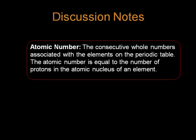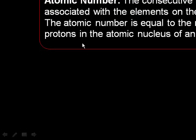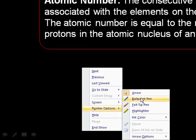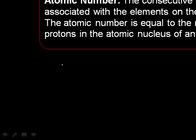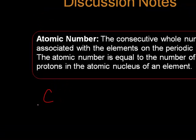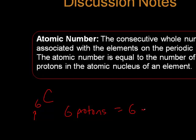Atomic number is a consecutive whole number associated with the elements on the periodic table. The atomic number is equal to the number of protons in the atomic nucleus of an element. So if we had an element such as carbon, carbon's atomic number on the periodic table is number six. That means carbon has an atomic number of six, which means it has six protons, and if it's a neutral element, it also has six electrons.